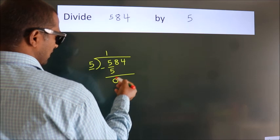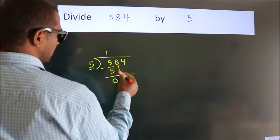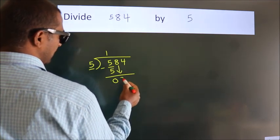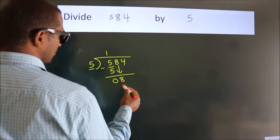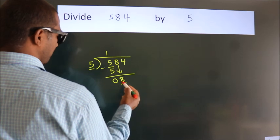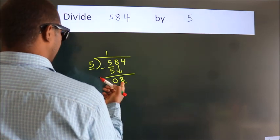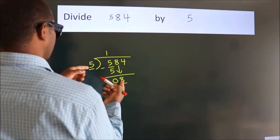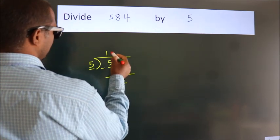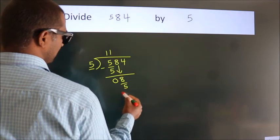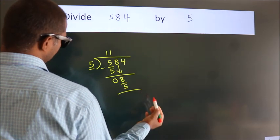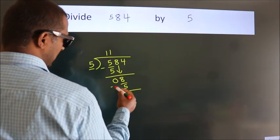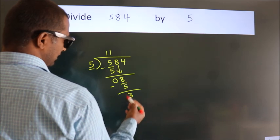After this, bring down the beside number. So, 8 comes down — so we have 8. A number close to 8 in the 5 table is 5 once, which is 5. Now we subtract. We get 3.